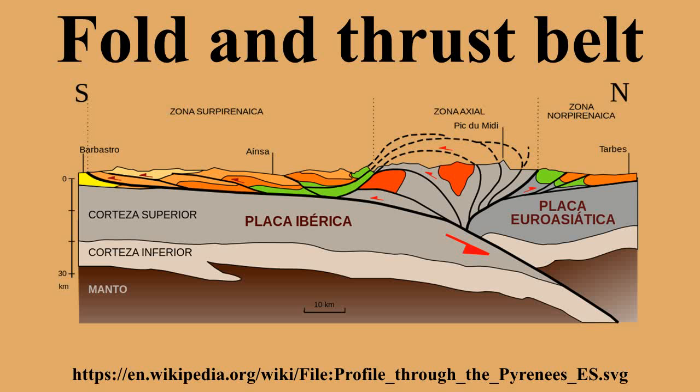Fold-and-thrust belts usually comprise both folds and thrust faults, commonly interrelated. They are commonly also known as thrust-and-fold belts, or simply thrust-fold belts.